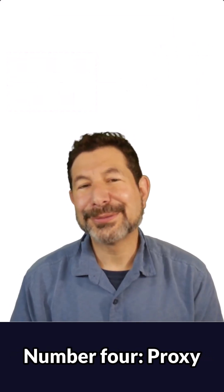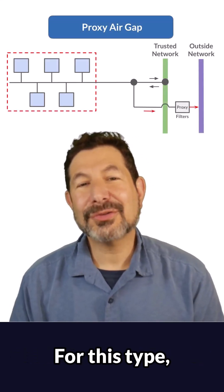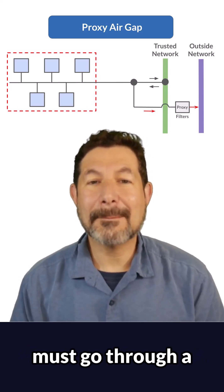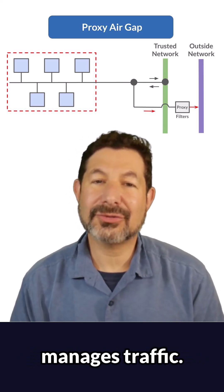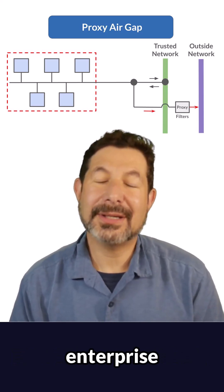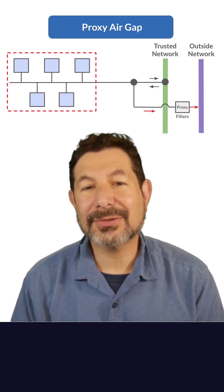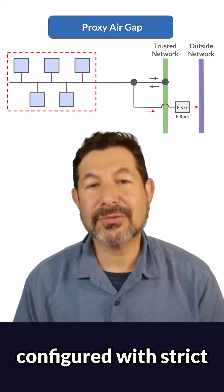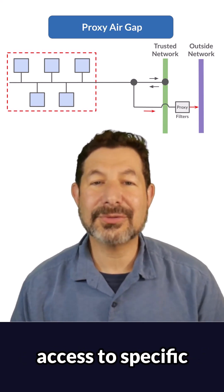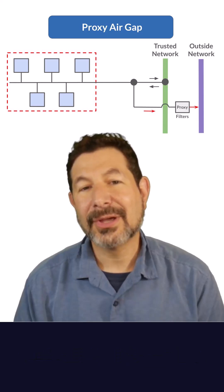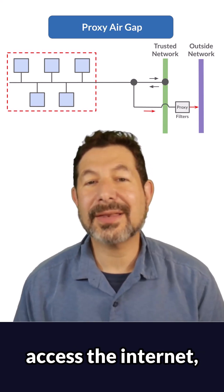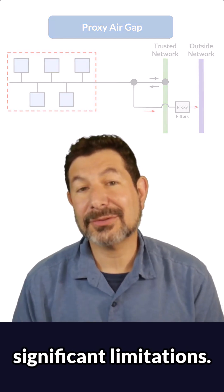Number four: proxy network. For this type, all outbound requests must go through a proxy network that manages traffic. Proxies are common in enterprise environments, often configured with strict rules that only allow access to specific whitelisted domains. While it's possible to access the internet, there may be significant limitations.